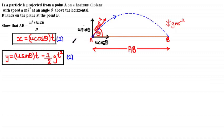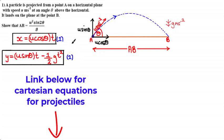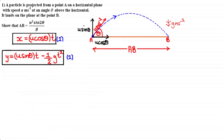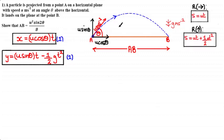These parametric equations are general equations for projectile motion and are easier to recall than the Cartesian equations, because they come directly from the Suvat equations you're used to. Equation 1 comes from the horizontal motion equation s = ut, where x represents horizontal displacement and u cosine theta represents the initial horizontal velocity for a particle projected at speed u and angle theta.